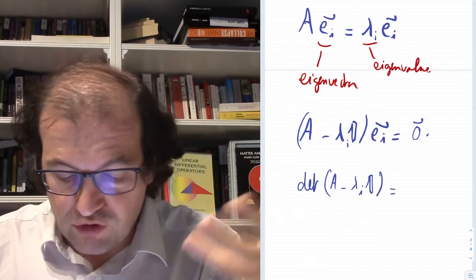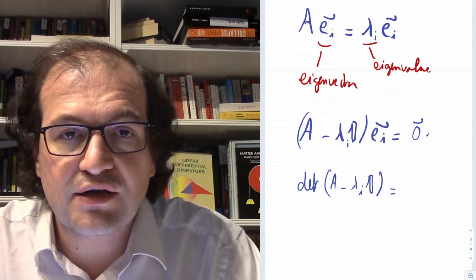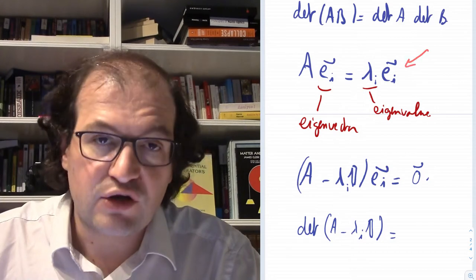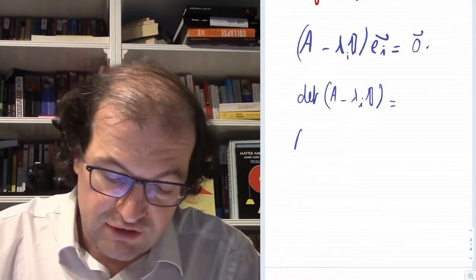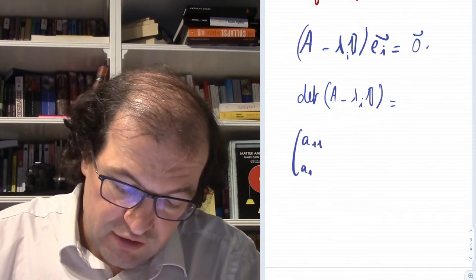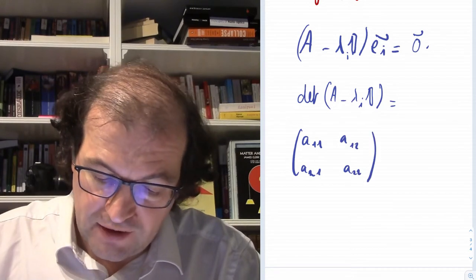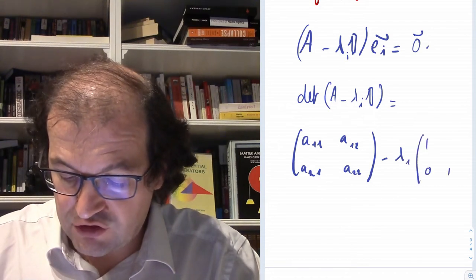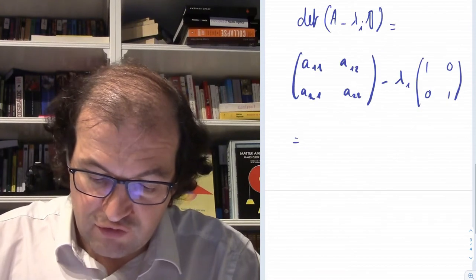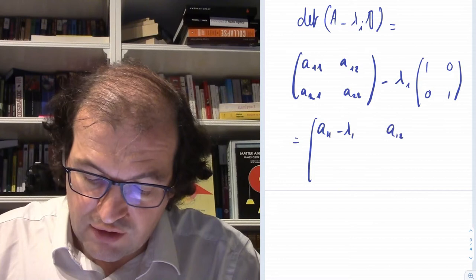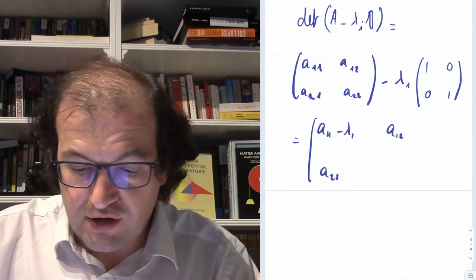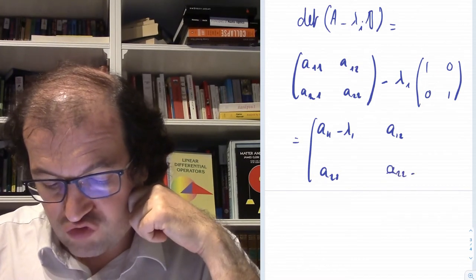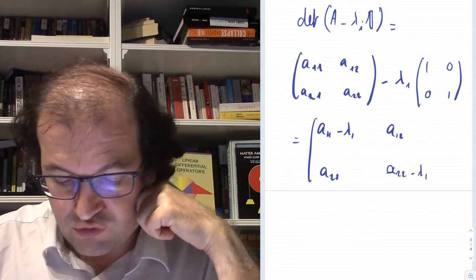That condition defines the characteristic polynomial for finding eigenvalues. Once we have the eigenvalue, we substitute it back into the linear equation to find the eigenvector. For a 2×2 matrix with elements a₁₁, a₁₂, a₂₁, a₂₂, we subtract λ from the diagonal and set the determinant to zero.